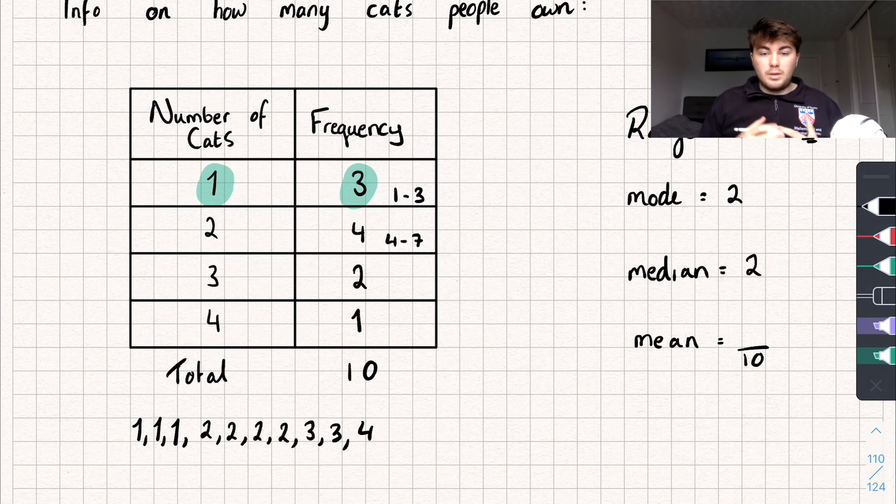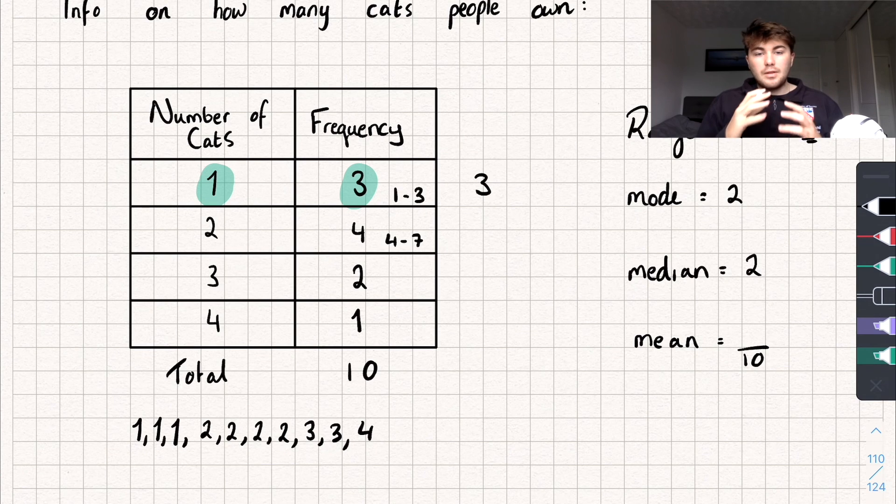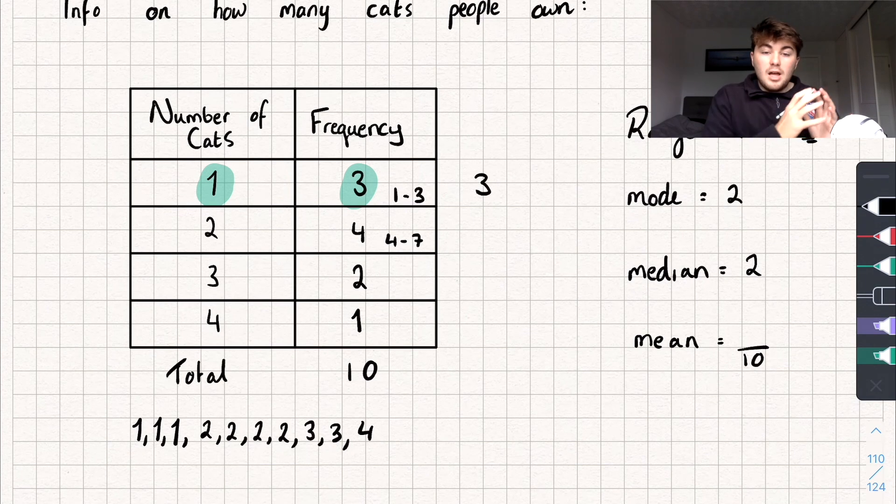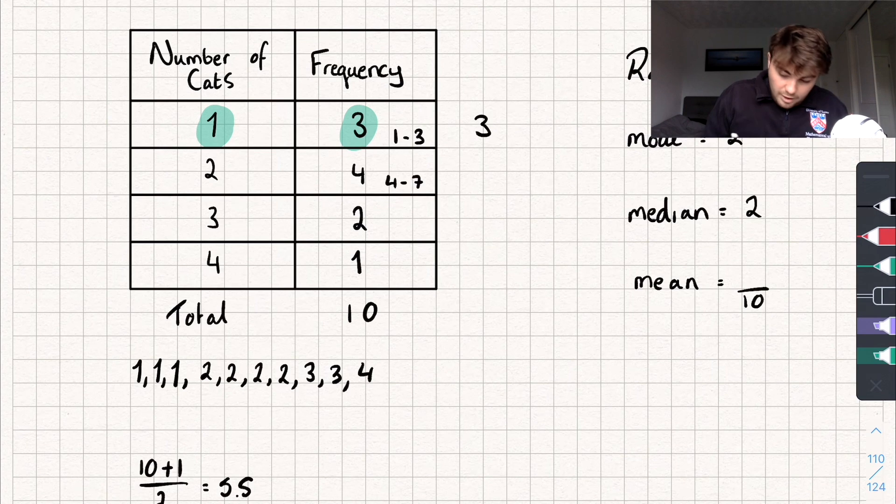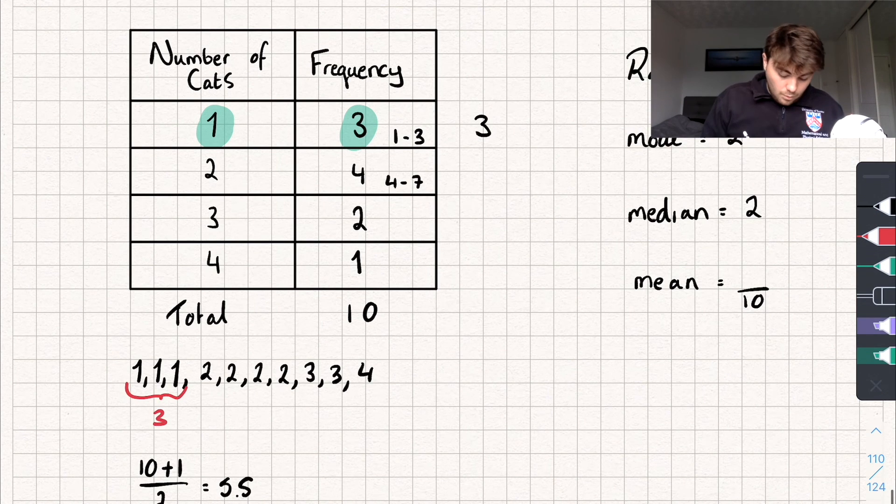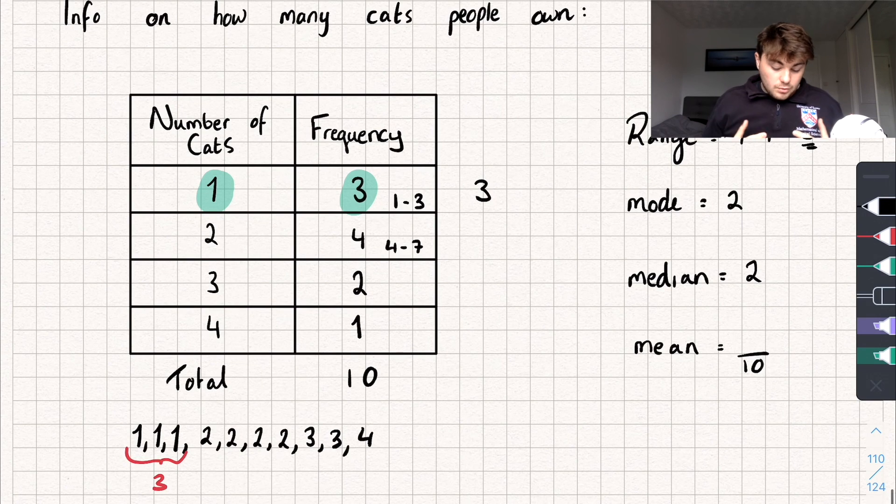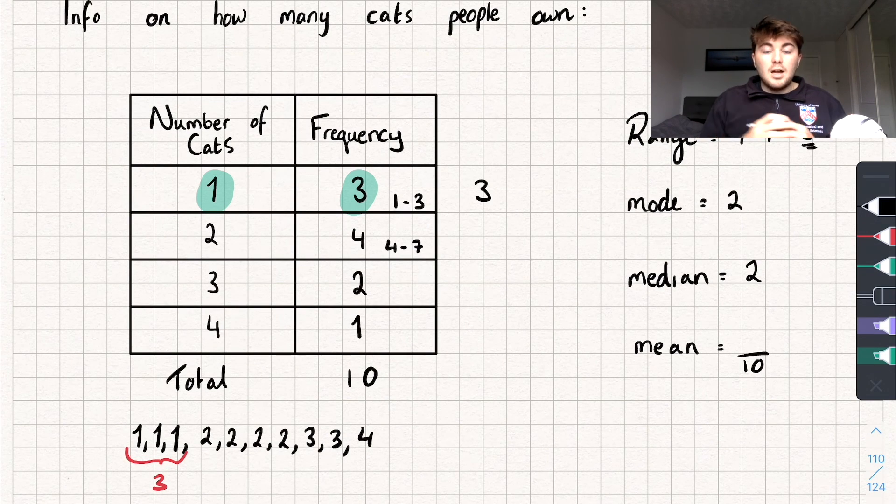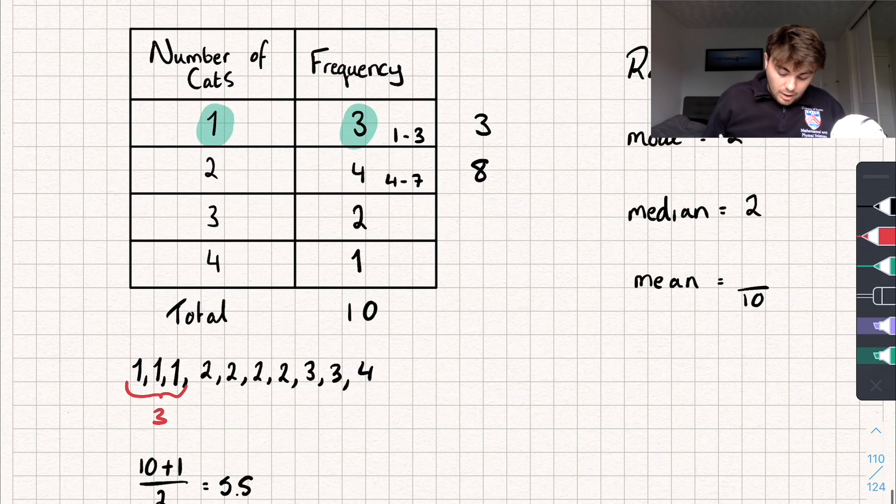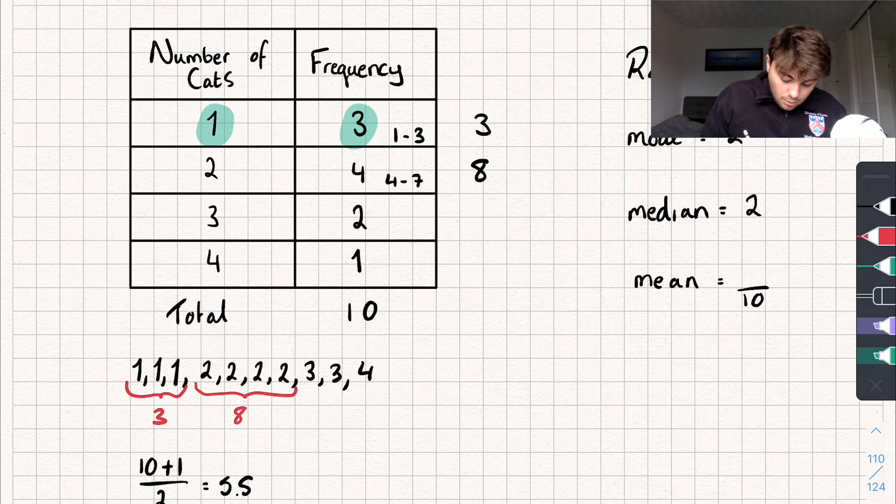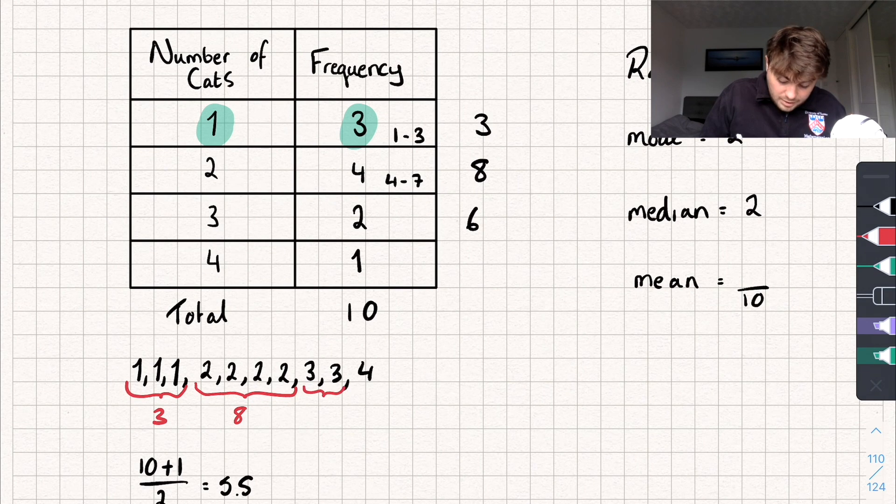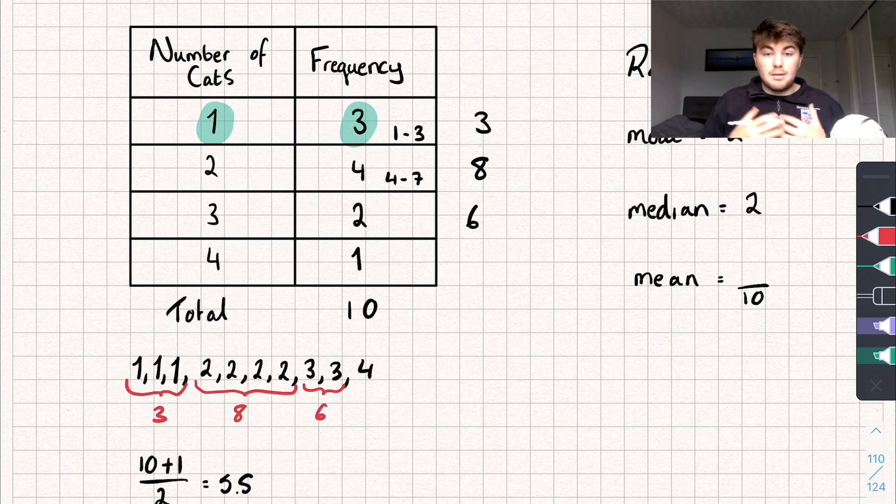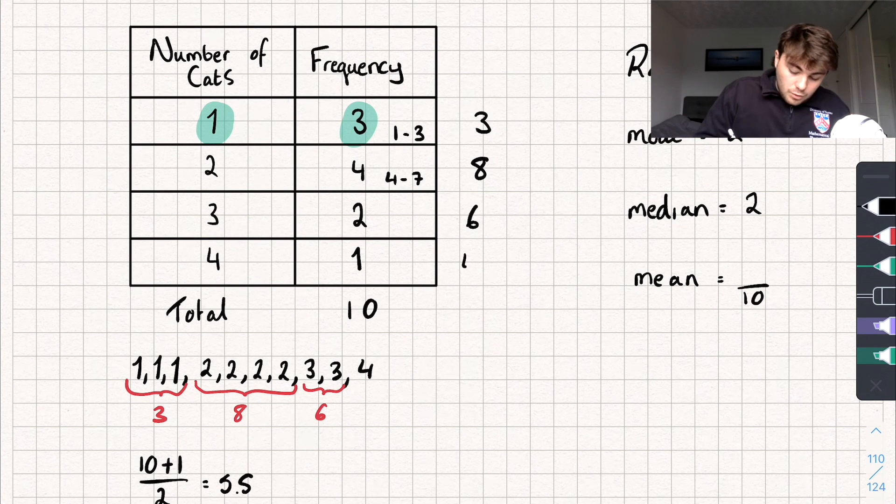So if we do that we're going to get 1 times 3 which is 3. Now the reason this is working is because we're going to multiply each number of cats by its frequency, and that gives us the sum of that number. So for example we did 1 times 3 and we got 3. Well if we add together these ones we get 3. Let's look at the next row. We've got 2 cats and the frequency of that is 4. And if we multiply that together we're going to get 8. And if you look at our list if we add together those four twos we get 8. Next row we've got 3 multiplied by 2 which is 6. And if you look down at our list of data we've got two threes. So if you add them together you get 6 which is the same as 3 times 2.